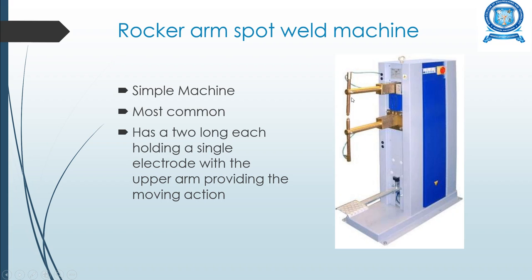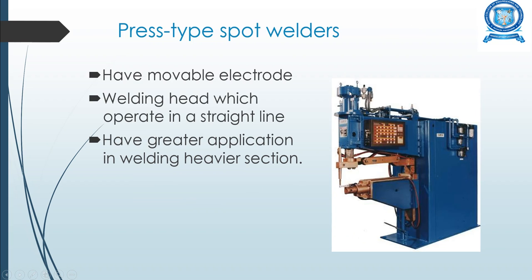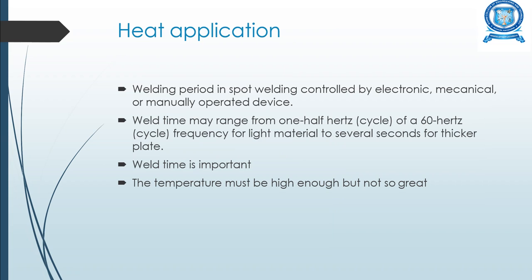After applying pressure via the rocker arm, the current is switched on and pressure is maintained until the weld is formed. In the press type spot welder, there is a movable welding head that operates in a straight line. This type has greater application for welding heavier sections, which cannot be handled as effectively by the rocker arm machine.